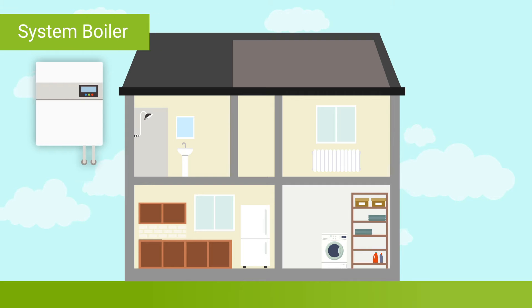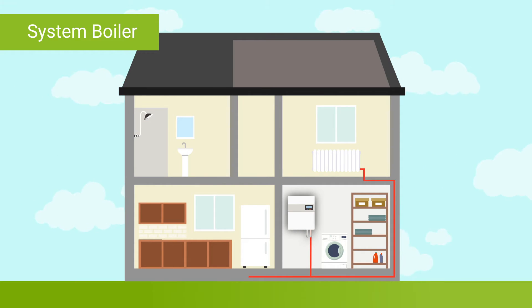That's where their bigger brother, the system boiler, comes in. System boilers are different from combi boilers in that they provide hot water to your home's central heating directly but employ a little extra help from a hot water storage cylinder.